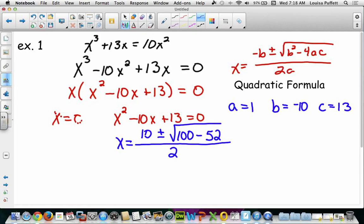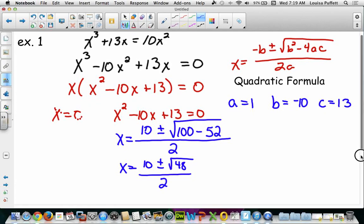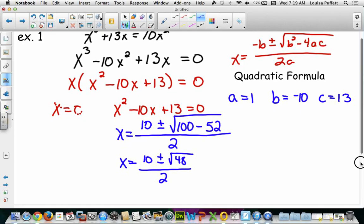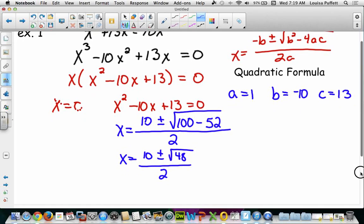Now I need to simplify this. So the first thing I want to do is subtract 52 from 100. And we get that x equals 10 plus or minus the square root of 48 all over 2. Now if we didn't have to simplify and put this in reduced terms, we would be done. But we always have to simplify and use reduced terms. So the next thing that we want to do here is look and see if there's a way that we can simplify the square root of 48.